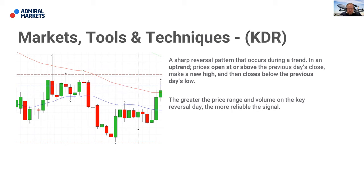It's that sharp reversal pattern that occurs during a trend. In an uptrend, prices open at or above the previous day's close, make a new high, and then close beneath the previous day's lows. On the opposite side, in a downtrend, we can see price has been moving down, then opens and pushes to a new low, but swings around and closes above the high of the previous candle. In this particular case it closed above the high of the previous three candles — a complete flip in terms of who is now in control of this market. When we see them, we sit up and take notice because they may provide an opportunity to get out of an existing trend or position ourselves for a possible new trend.